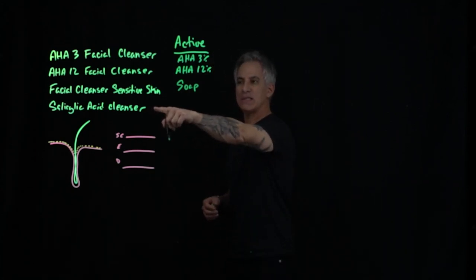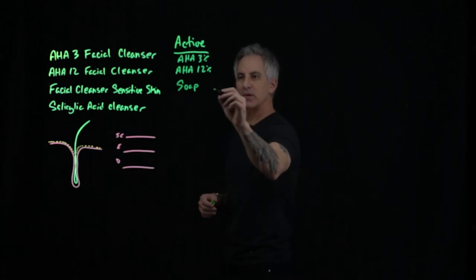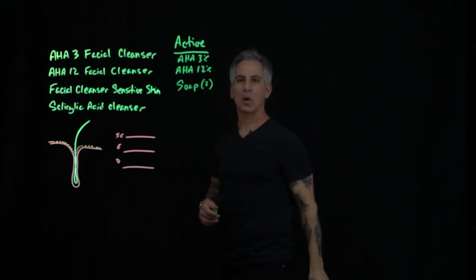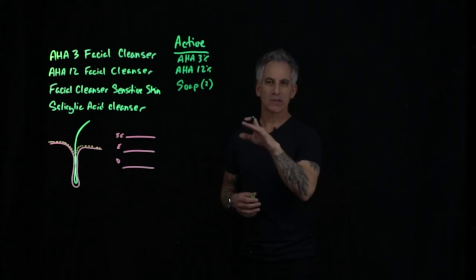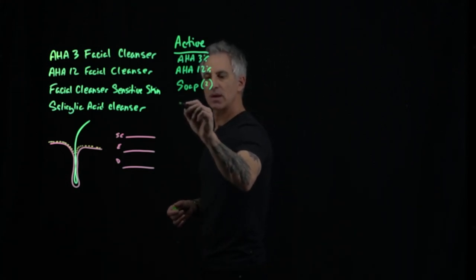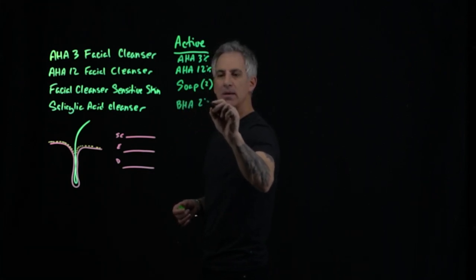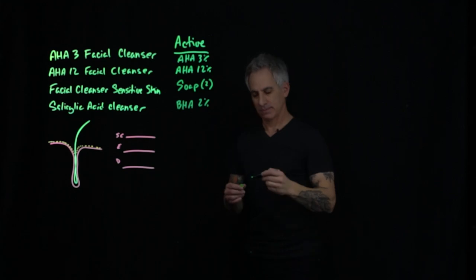And then on the salicylic acid cleanser, oh, and by the way, on the soap, there are two types. And I'll go over those in a second. Their names not important, but I'll tell you what's in it. The salicylic acid cleanser, which is BHA-2%.